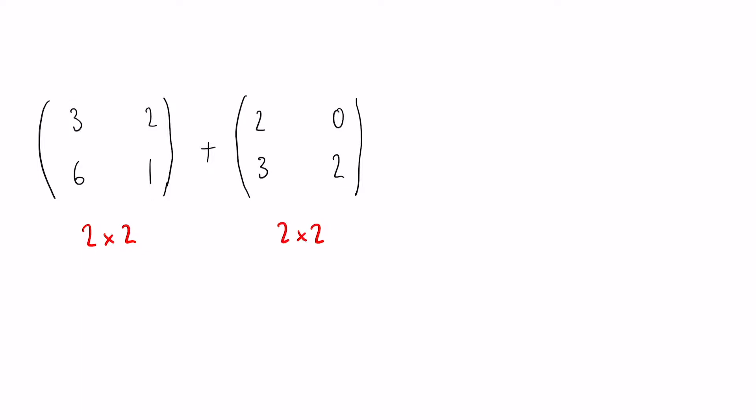For example, the 3 and the 2 are the top-left numbers, so you add those. Similarly for the 2 and 0, the 6 and 3, and finally the 1 and 2. By adding those together, 3 plus 2 in the upper left corner gives us 5.